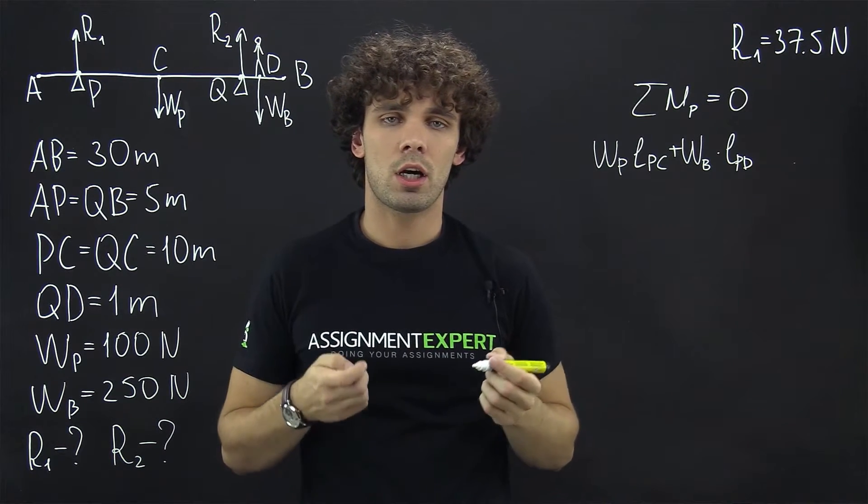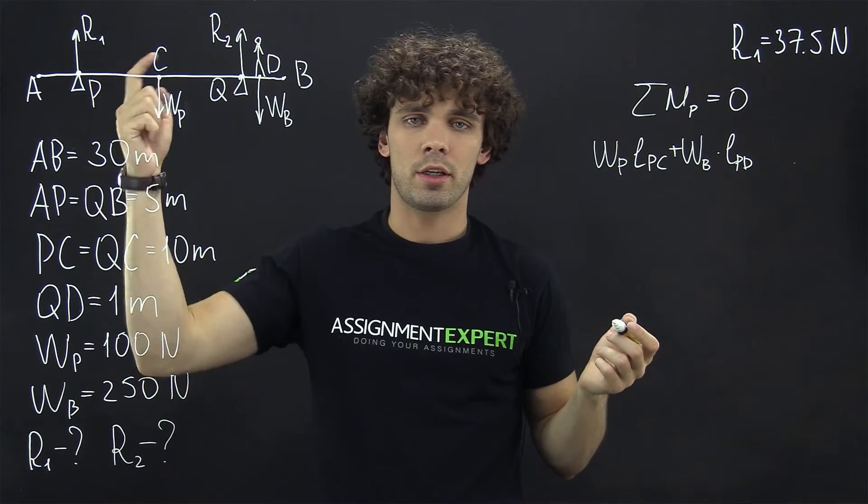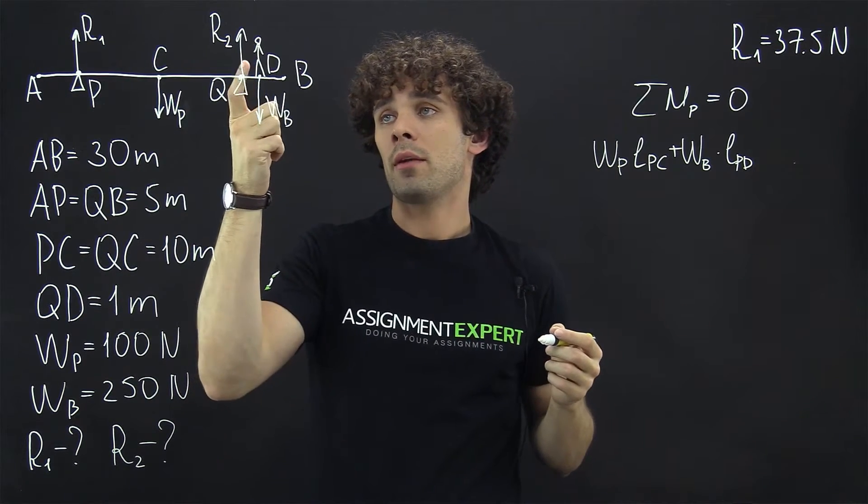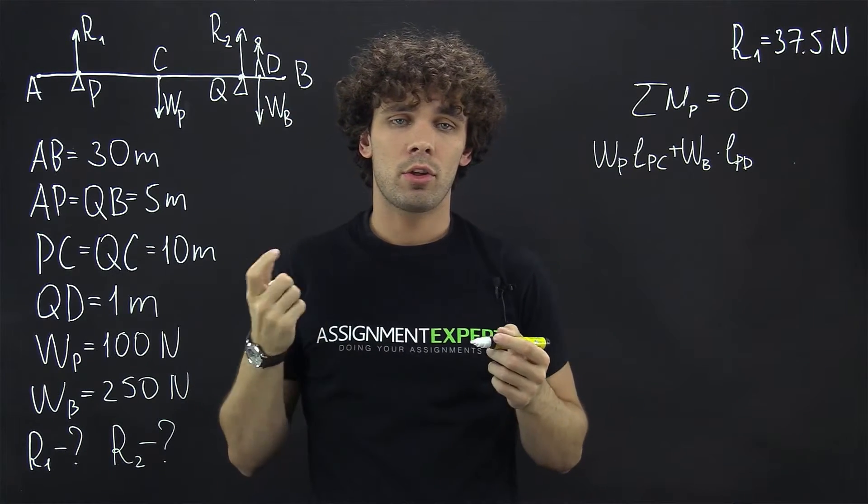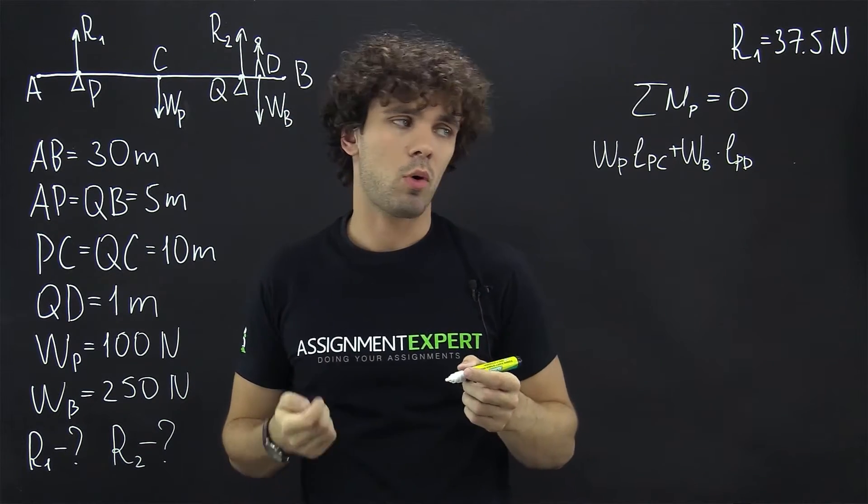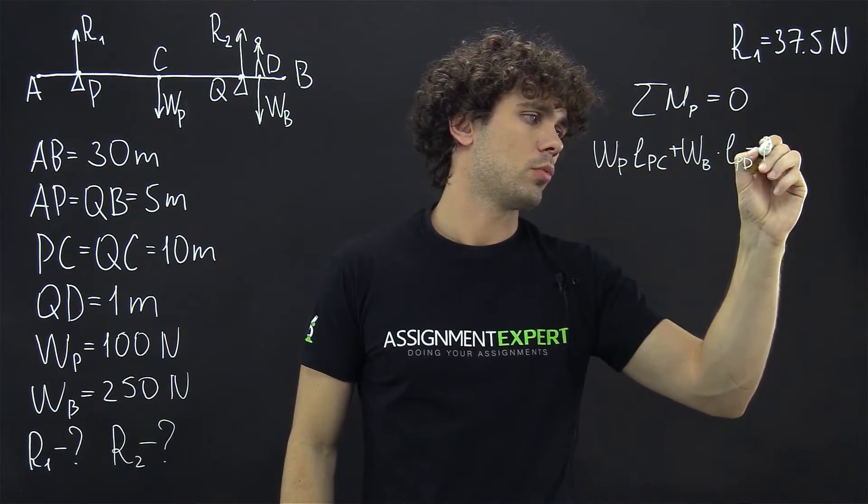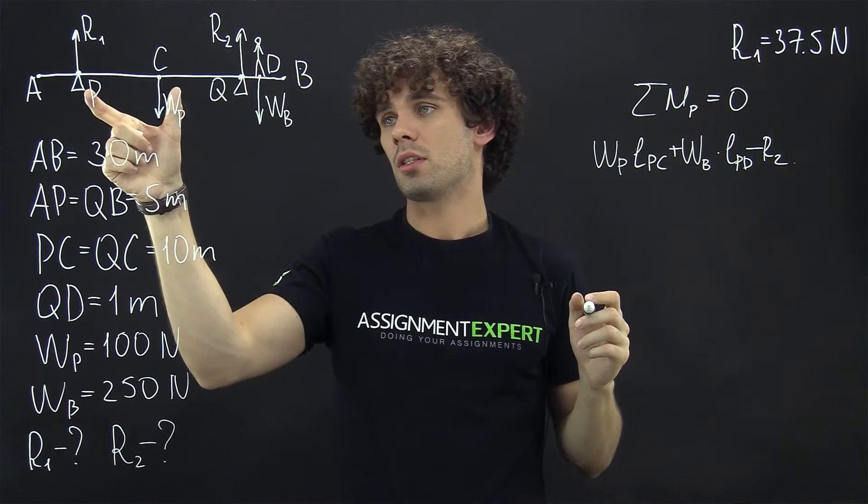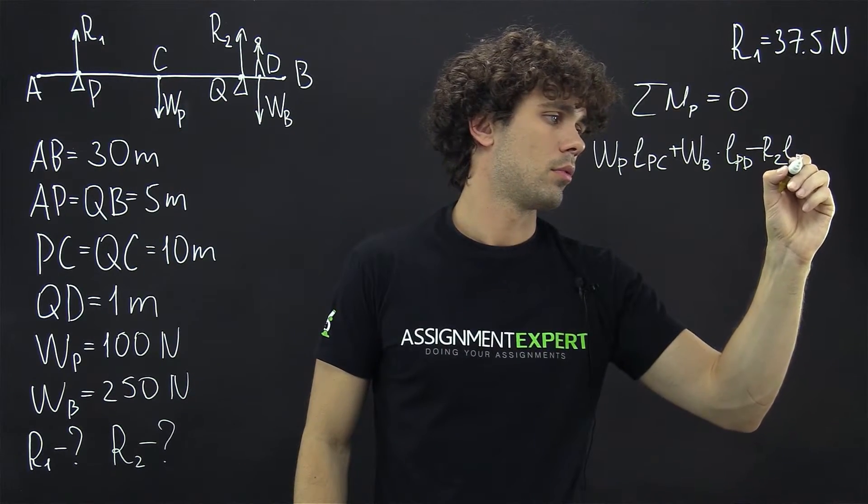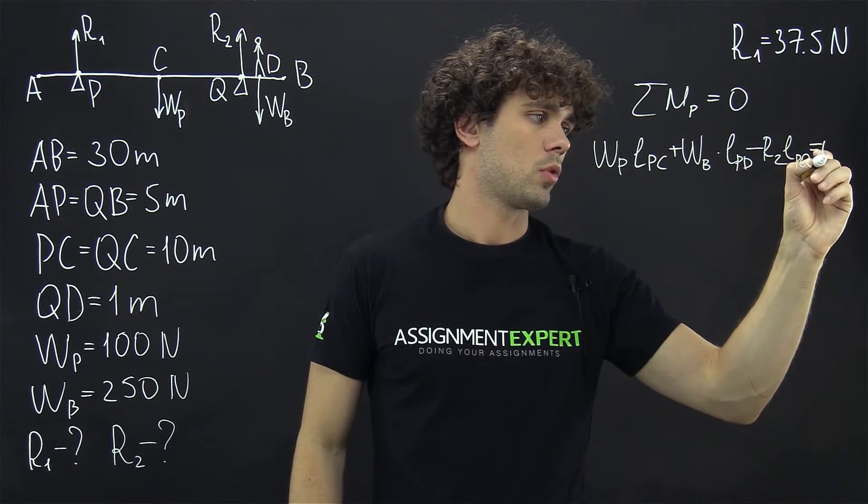These two moments are with the positive sign because they're in the clockwise direction. Now we have R2, and the direction of this force is counterclockwise. So we have minus R2 times the distance LPQ, and this equals zero.